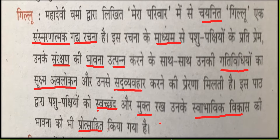This lesson also encourages us to keep animals free and independent and let them develop in their natural habitat and in the natural way. Swachhant means independent; mukta means free; Swabhavik Vikas means their natural development. When we put them in cages, they forget to fly, and their development doesn't happen naturally. That is what the authoress Mahadevi Verma has to tell us.